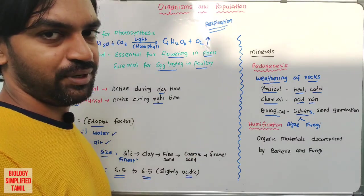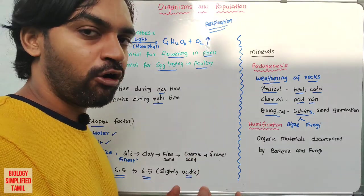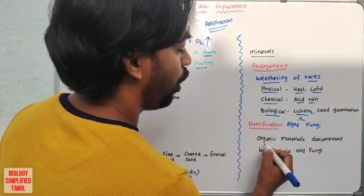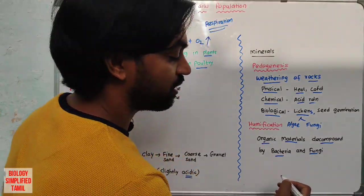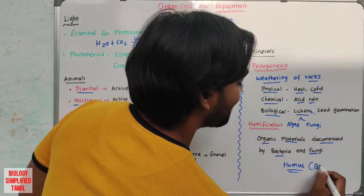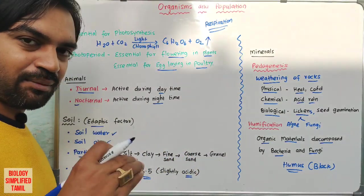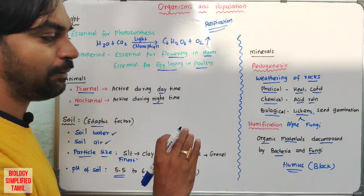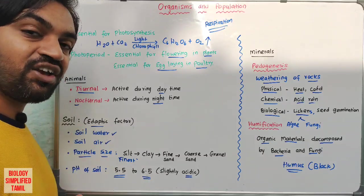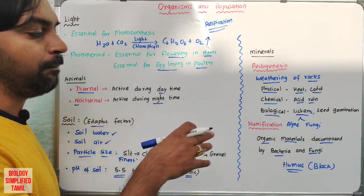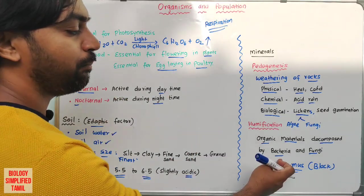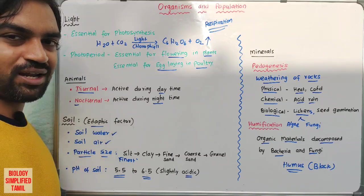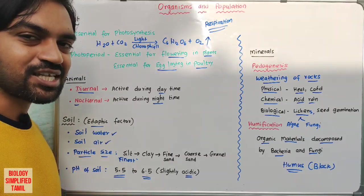Humification is the next type. This involves organic parts of plants and animals forming humus. Humus is an organic material decomposed by bacteria and fungi. Humus is black in color and forms the top soil structure, improving soil quality. These are the abiotic factors in organisms and population. Like, share, and comment on Biology Simplified Tamil. Thank you.